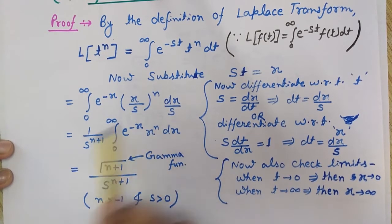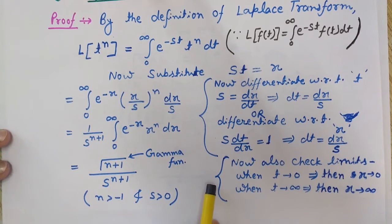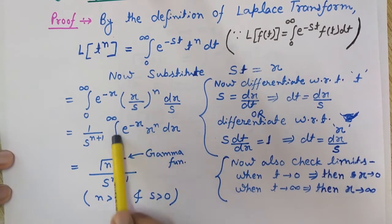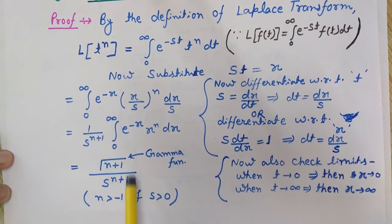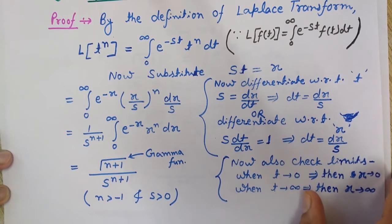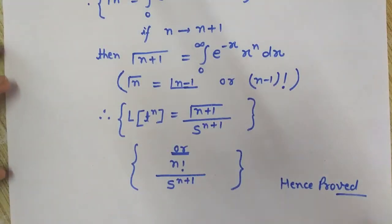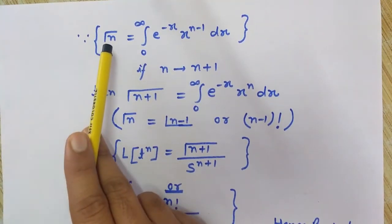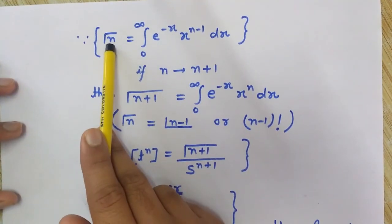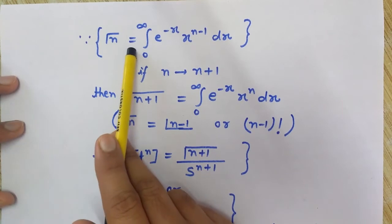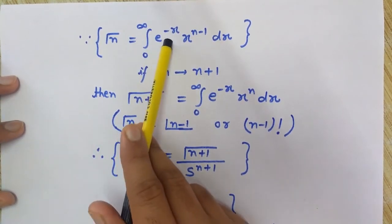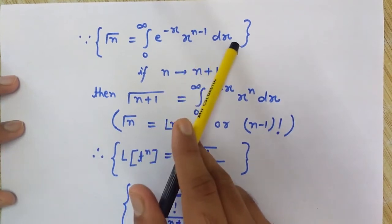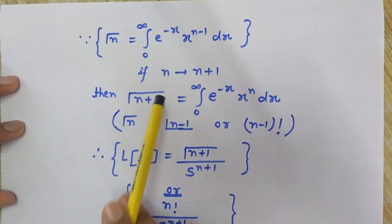This integral is a well-known function called the gamma function, represented by the symbol gamma. It equals gamma of n plus 1, under the conditions that n is greater than minus 1 and s is greater than 0. The gamma function is defined as: gamma(n) equals the integral from 0 to infinity of e to the power minus x times x to the power n minus 1 dx.